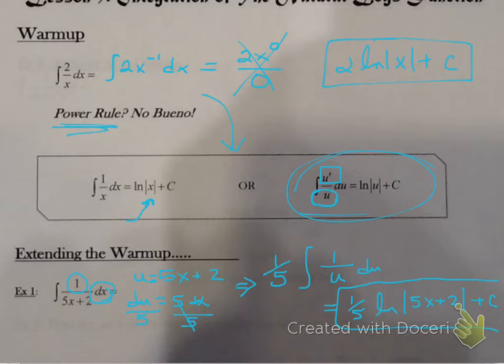And if we were to derive ln of 5x plus 2, we would happen upon 1 over 5x plus 2, which is what we started with. Let's look at another example.